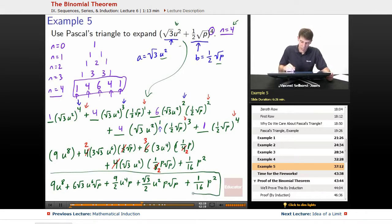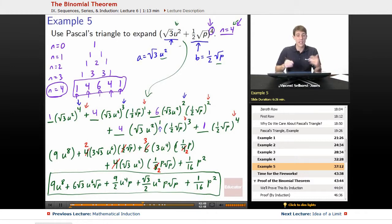It's about as difficult as any expansion the Pascal's Triangle will wind up being, but still notice how much faster that wound up making it than if we had tried to do this whole thing by hand of doing root 3u squared plus 1 half root p times root 3u squared plus 1 half root p times root 3u squared plus 1 half root p times root 3u squared plus 1 half root p. We'd still be working through it, we'd still have a lot more to go, so it makes things faster. We have to be careful and make sure that we pay attention to a couple things.